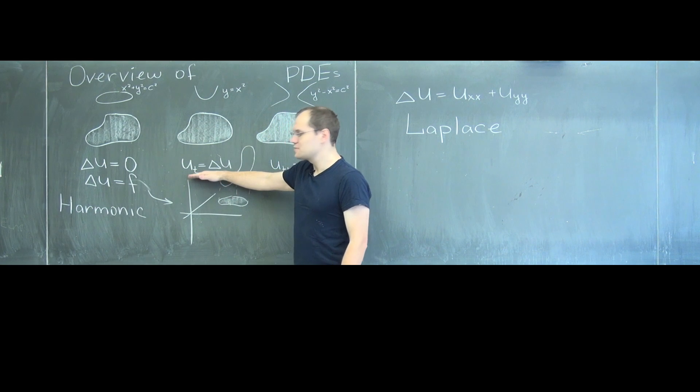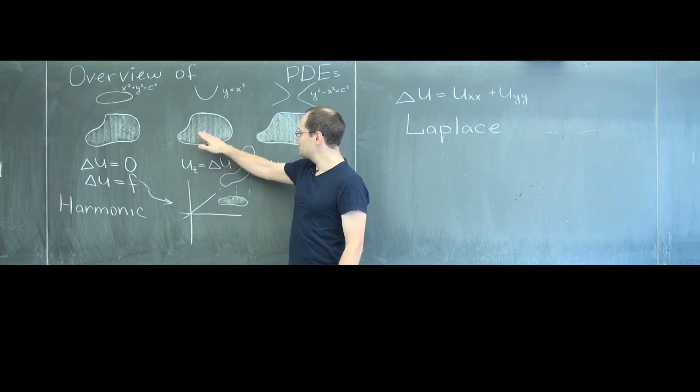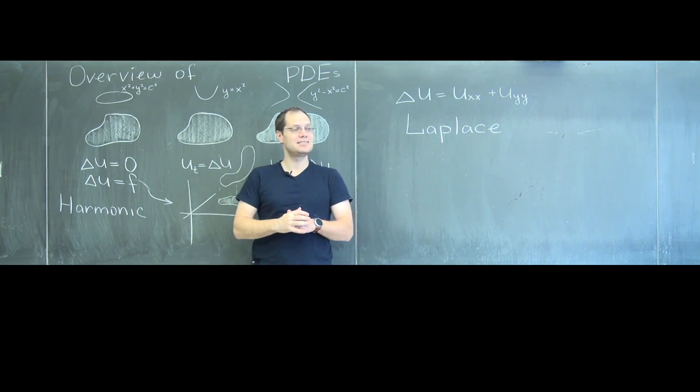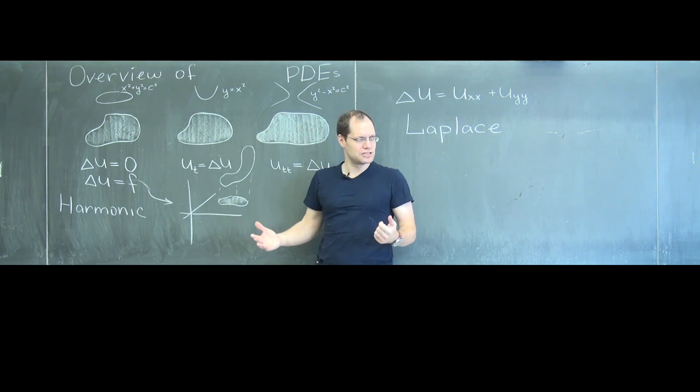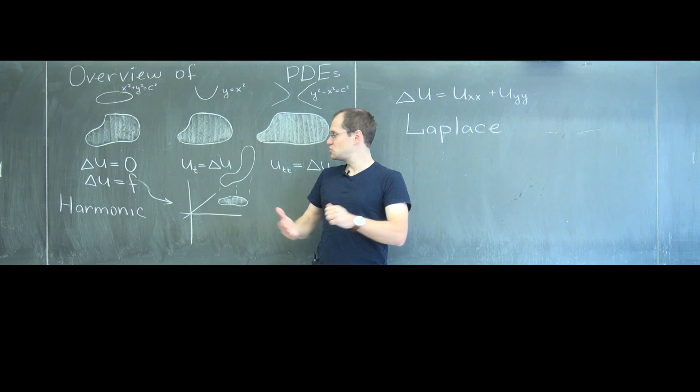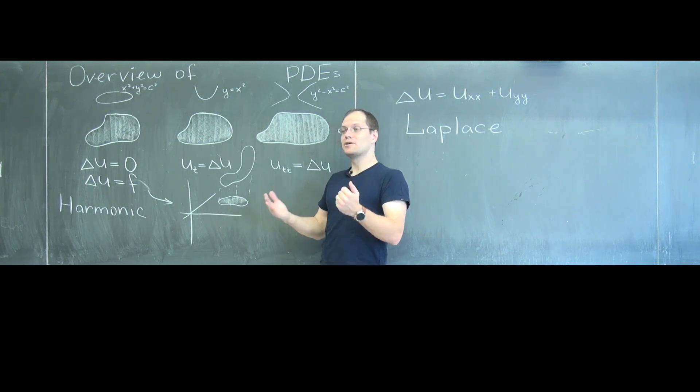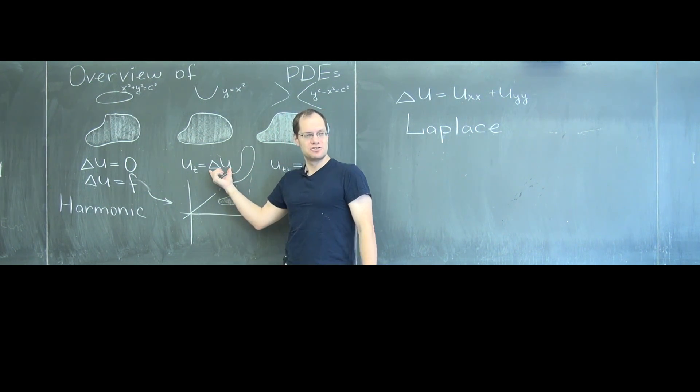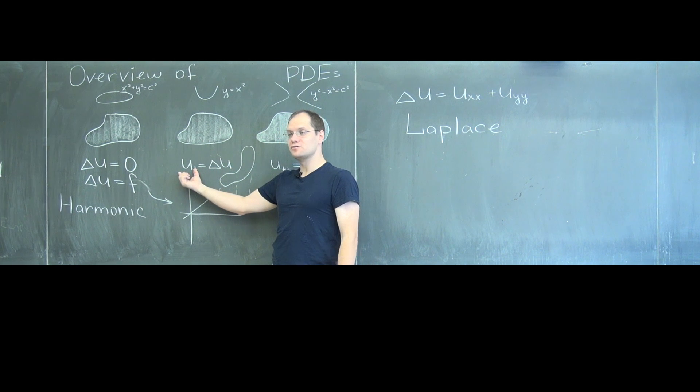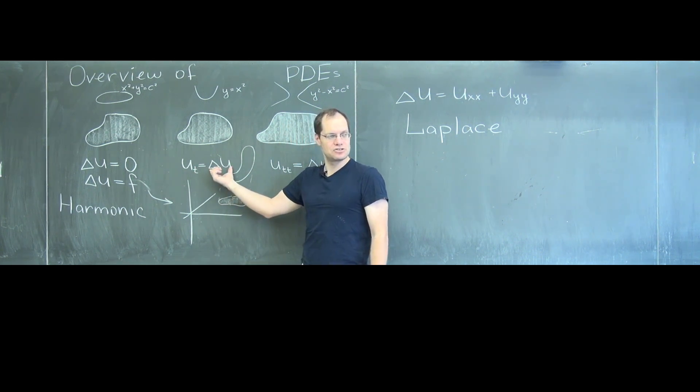But now there are three variables if you think of this as being your domain: x, y, and t. So now this is an evolution. It starts somewhere and then begins to evolve, and how it evolves depends on the spatial derivatives. The rate of evolution depends on the spatial derivatives.